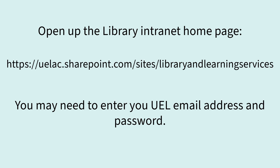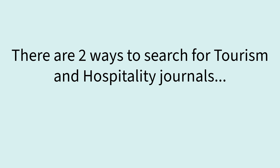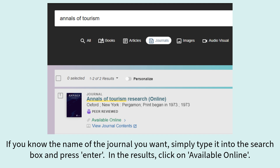Open up the Library Intranet homepage. You may need to enter your UEL email address and password. Click on Library Search under the main title. There are two ways to search for Tourism and Hospitality journals. If you know the name of the journal you want, simply type it into the search box and press enter.